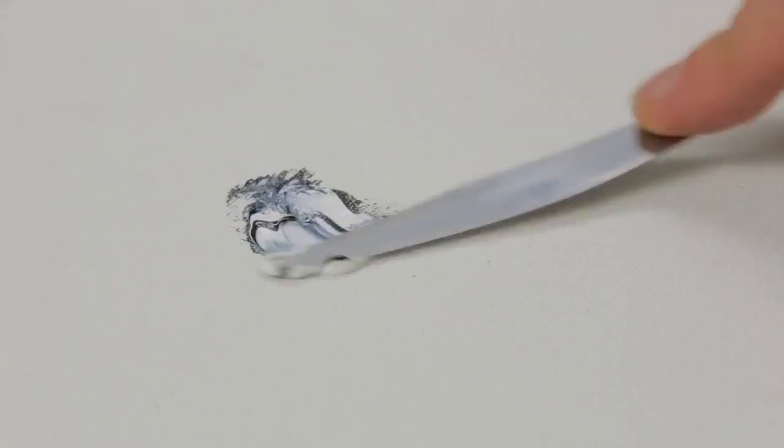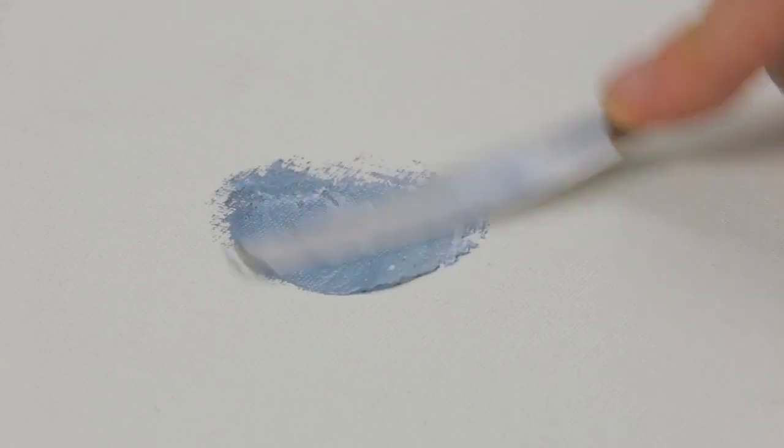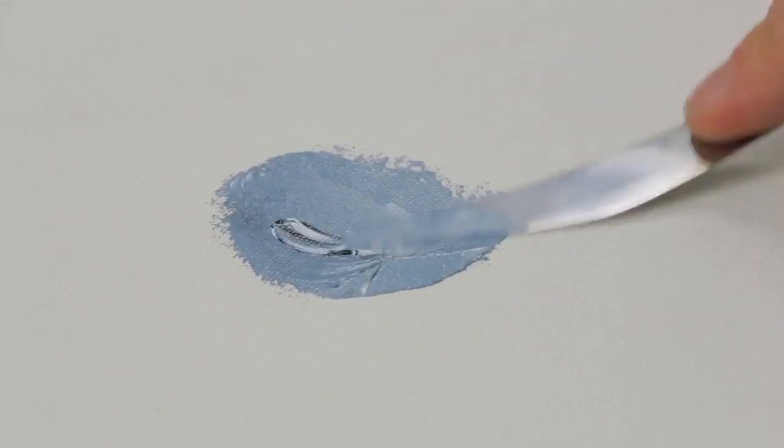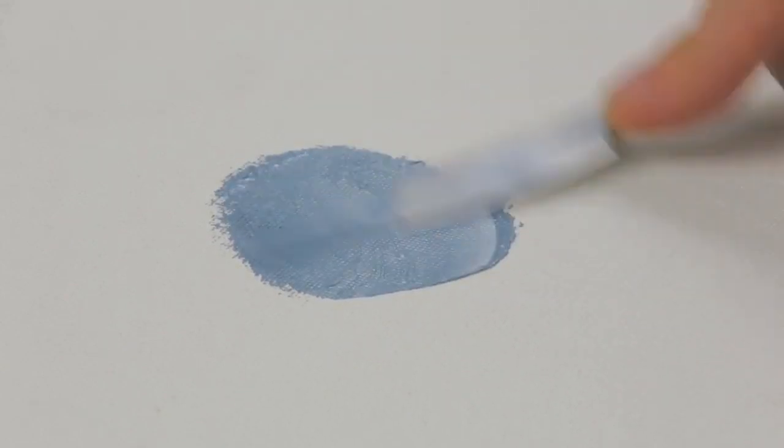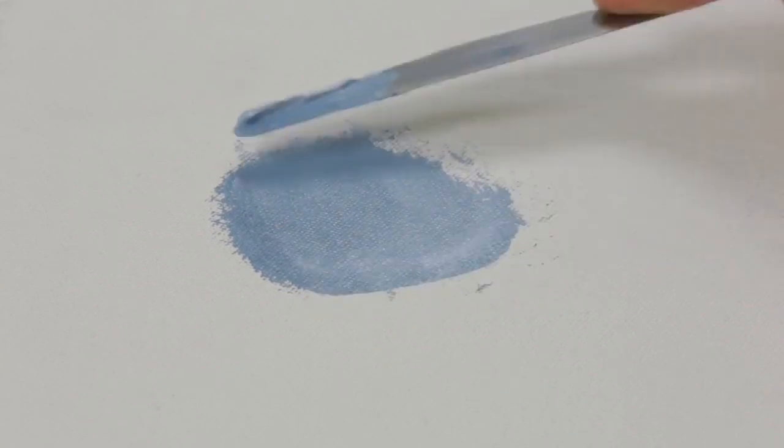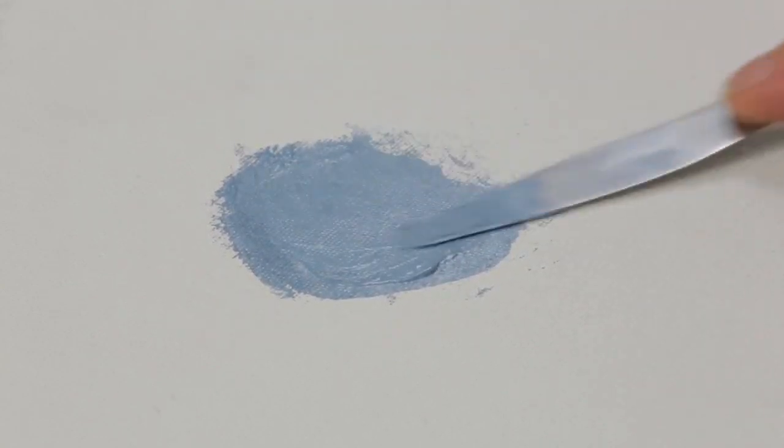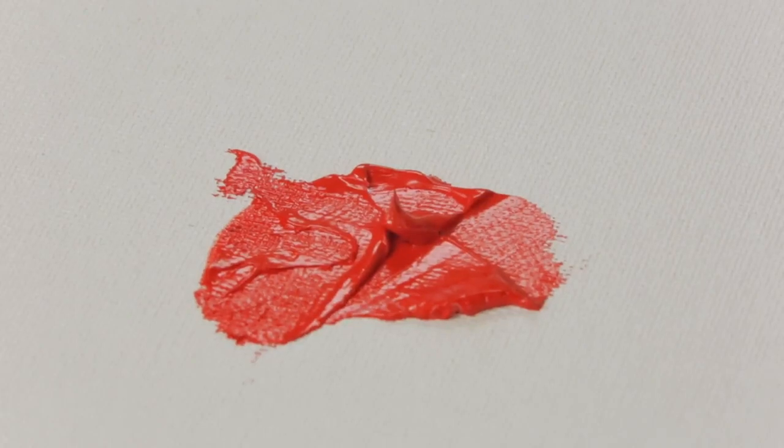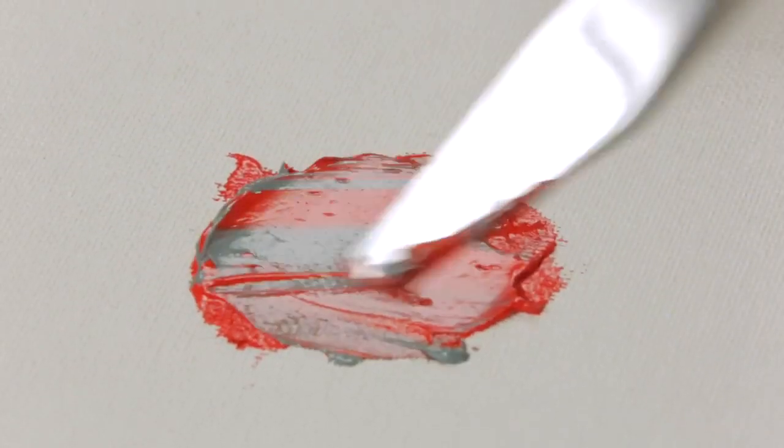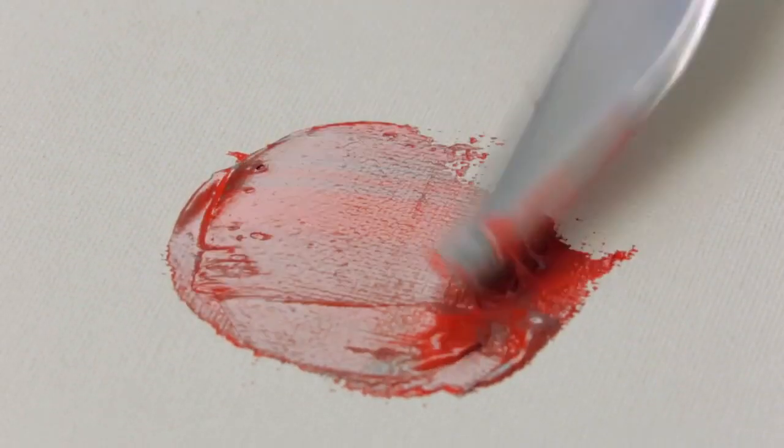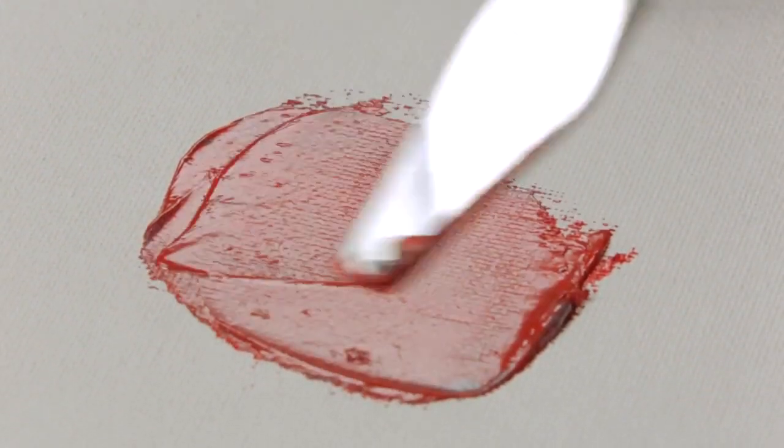I'm adding titanium white to the black to bring it to as close as I can the same value as the cadmium red. By incrementally adding this mid-toned grey to the red I can reduce its level of saturation but retain its value.